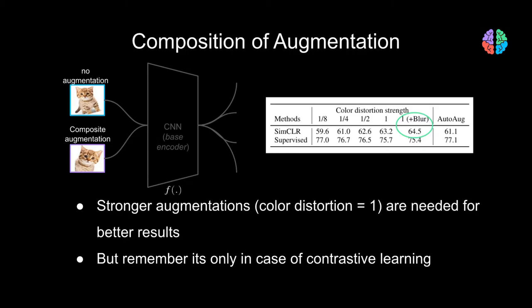It's fair to have a composition of augmentations, but how much augmentation should we do? In other words, what should be the strength of color distortion to get the best results? The answer is simple: strong augmentations are needed to achieve the best results in contrastive learning.